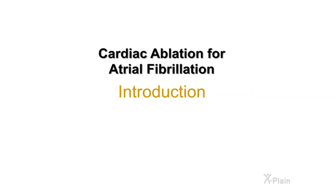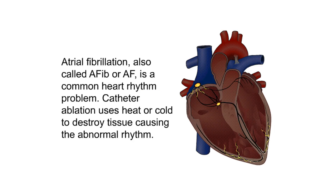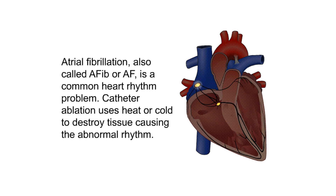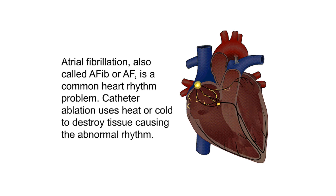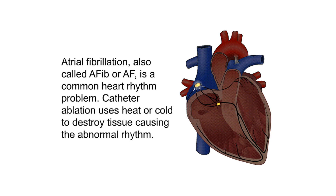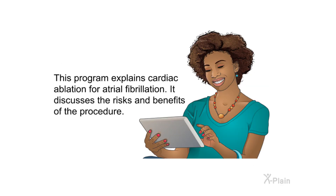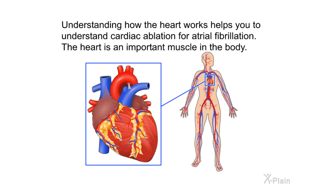Cardiac ablation for atrial fibrillation — introduction. Atrial fibrillation, also called AFib or AF, is a common heart rhythm problem. Catheter ablation uses heat or cold to destroy tissue causing the abnormal rhythm. This program explains cardiac ablation for atrial fibrillation and discusses the risks and benefits of the procedure.